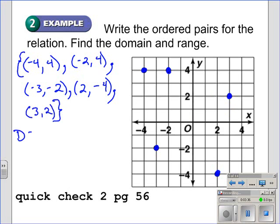The domain, by definition, is the set of x-values, the different x-values: negative four, negative two, negative three, positive two, and positive three.